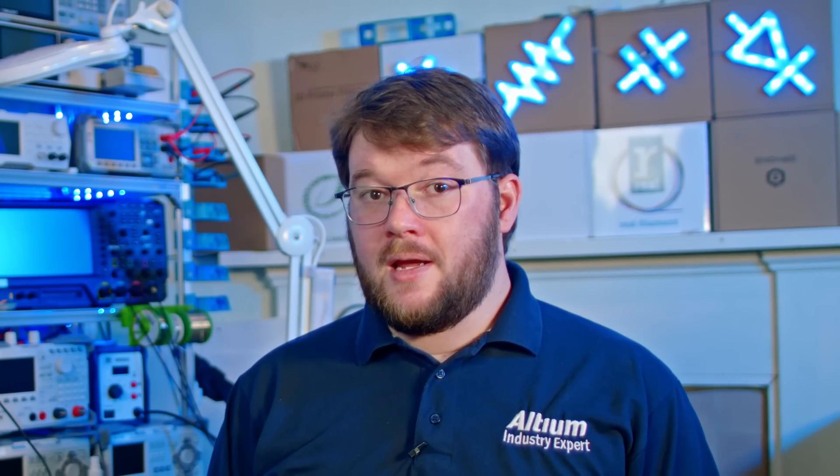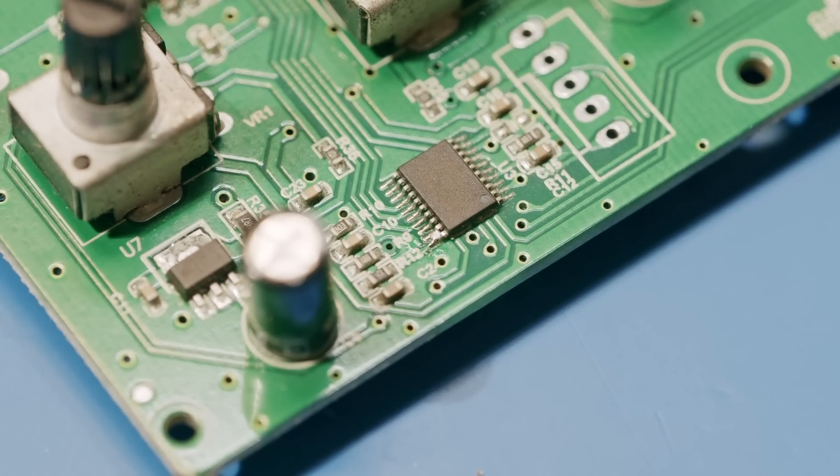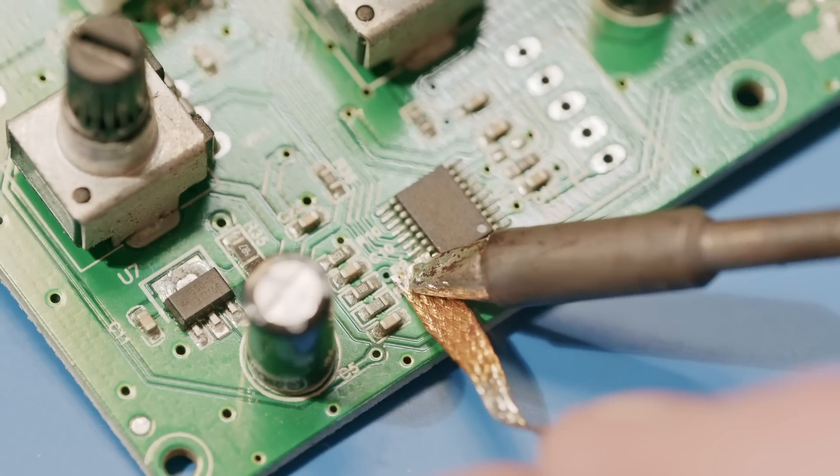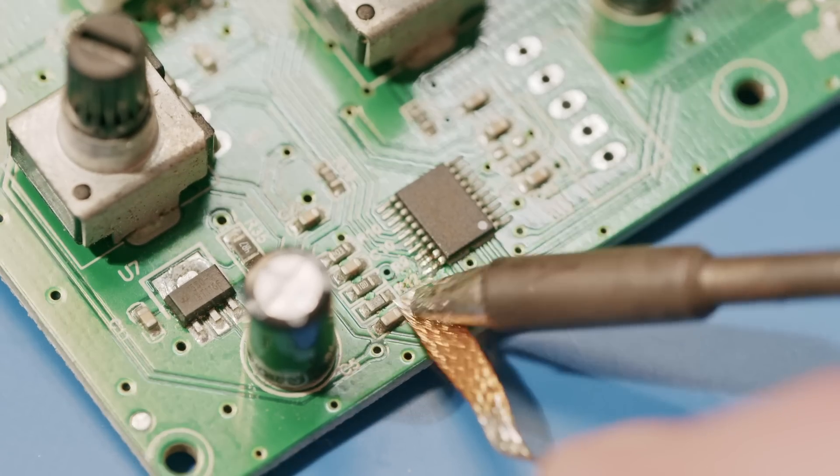Check your schematic and PCB layout to look for locations where connections to the voltage rail and ground are close together, especially within the same component, and look for solder bridging the pins. If nothing immediately jumps out at you, it's a good time to double check part numbers and their pinout. For example, I've accidentally ordered the wrong variant of a component that has multiple pinout variations in the past.